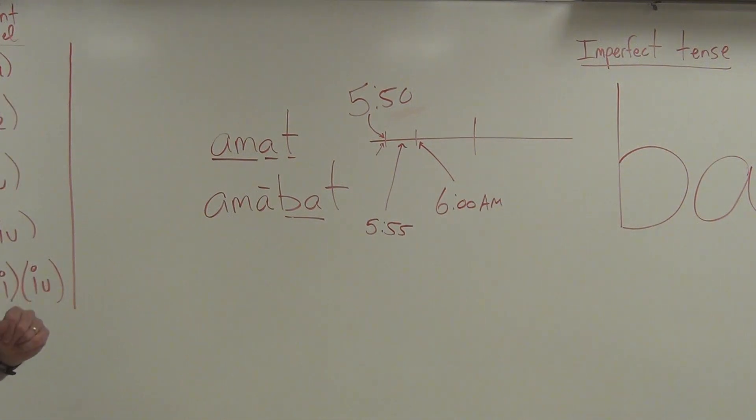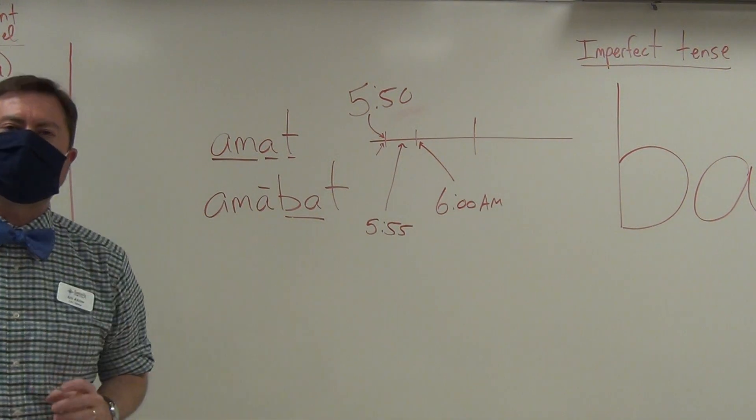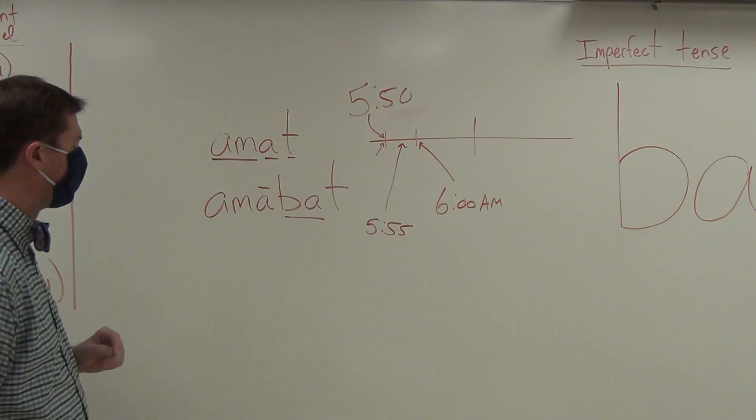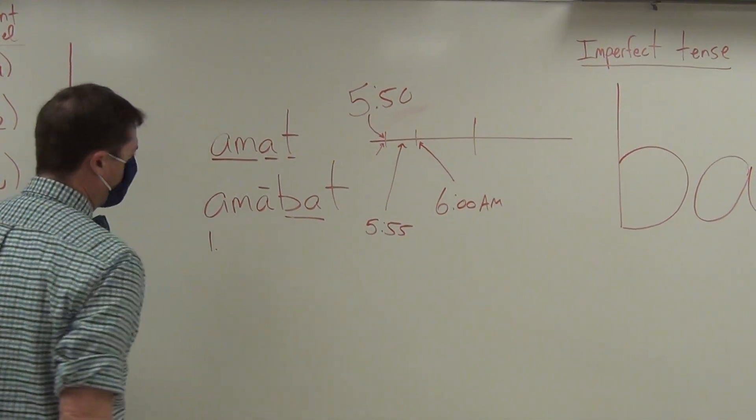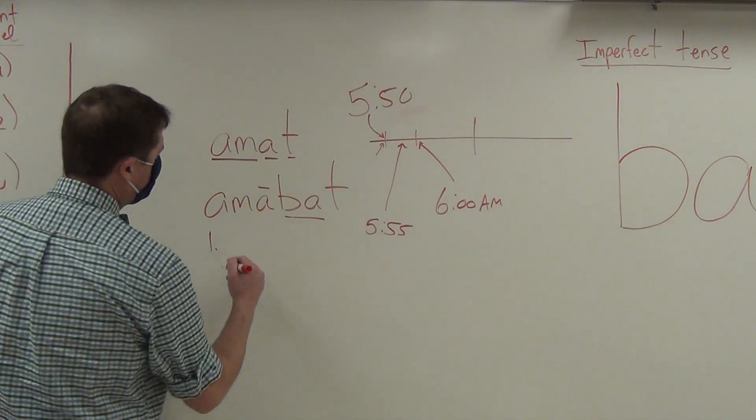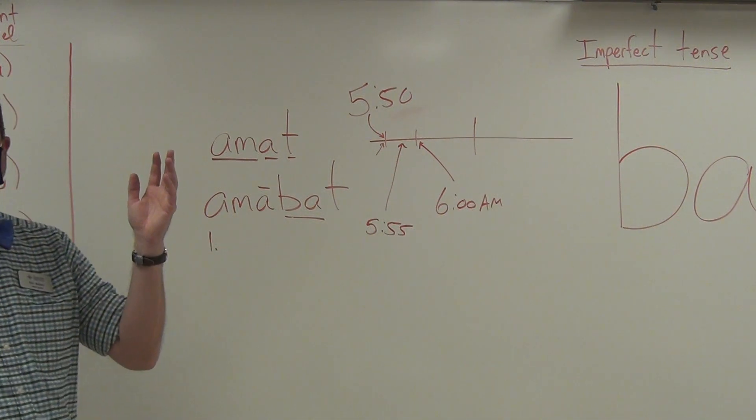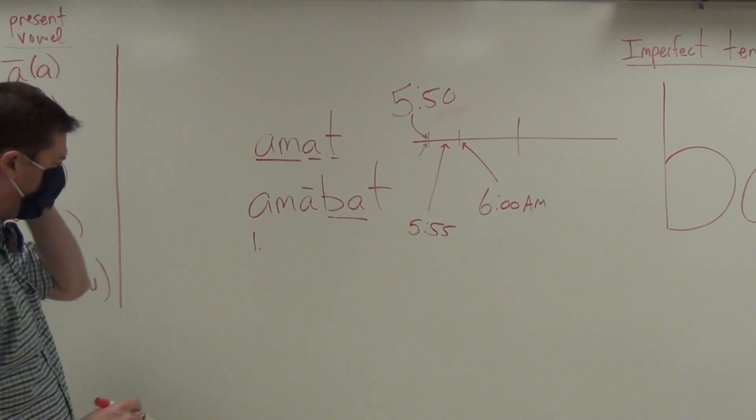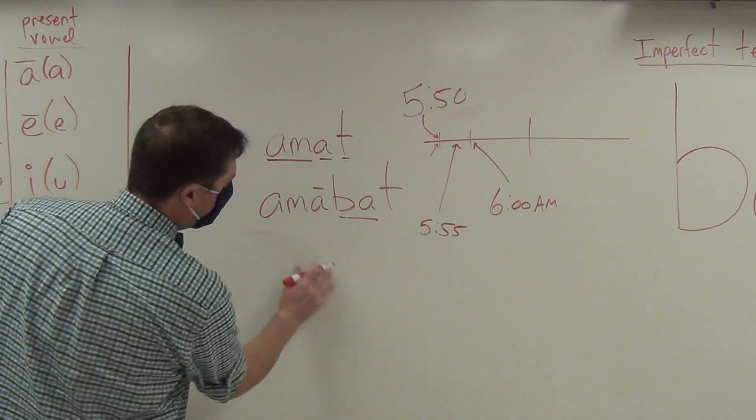So let's go with amabat. How would we then express it? Well, there are several ways. One way that you can express an imperfect tense verb is simply to say—and instead of amabat, I'm going to use a generic subject for subject and verb for verb.